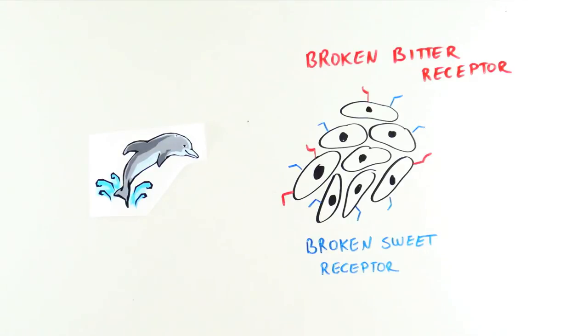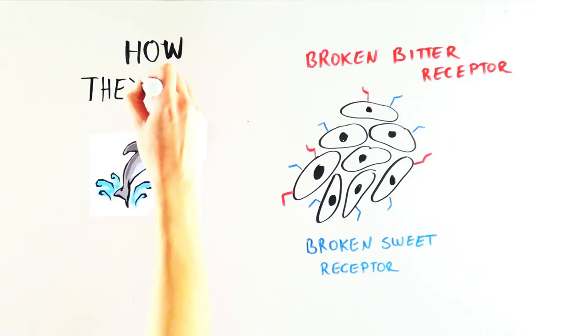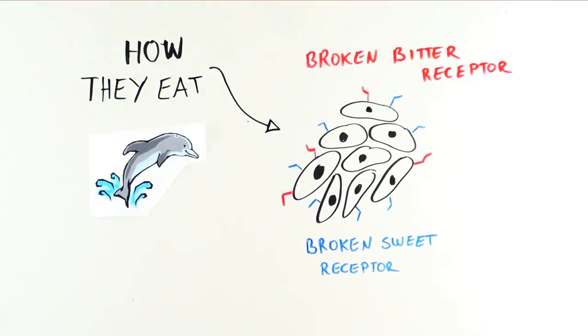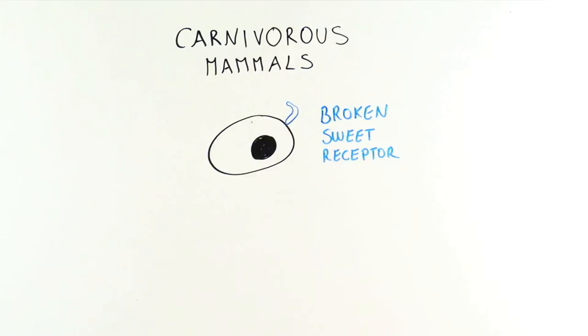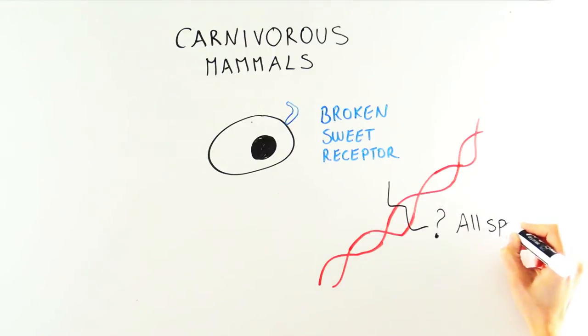Because dolphins swallow their food whole, they probably don't need to taste much of anything. For dolphins, their limited palate likely reflects the way they eat, not just what they eat. So many carnivorous mammals cannot taste sweet because they have a broken sweet receptor. But is the receptor broken in the same place for these species?